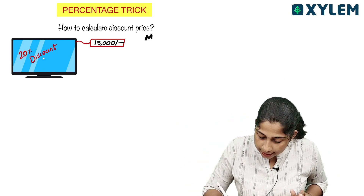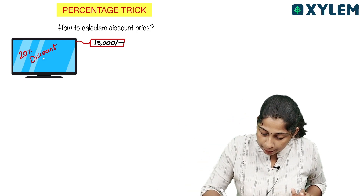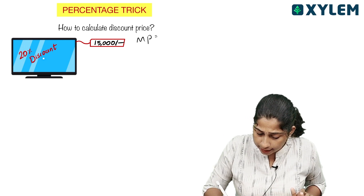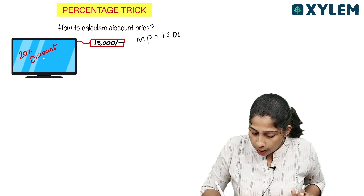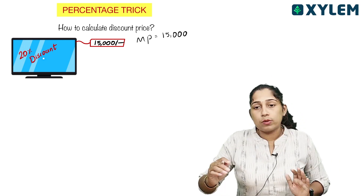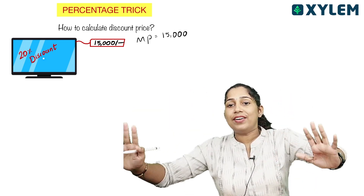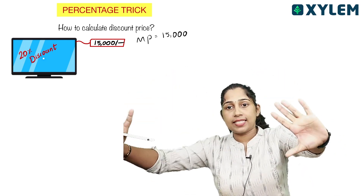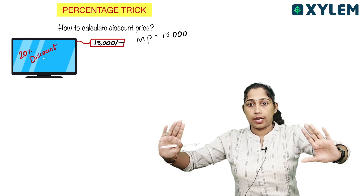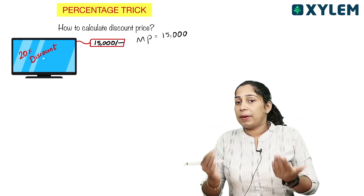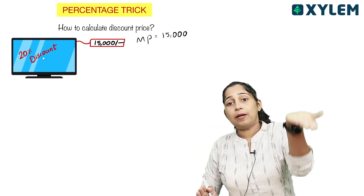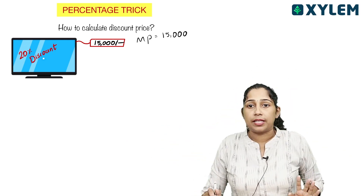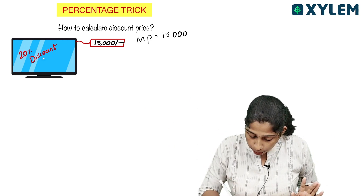What is the marked price? The marked price is 15,000. That means the TV price is 15,000. We will reduce the price — so what is the discount amount? We can find the 20% reduction on that TV.